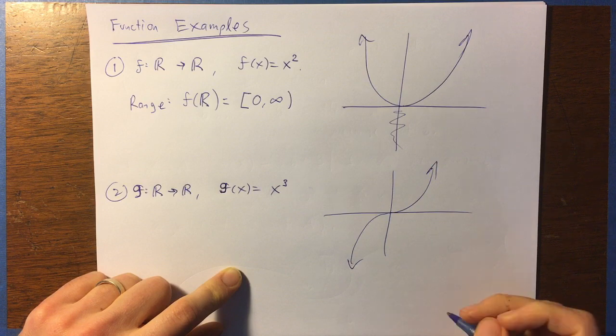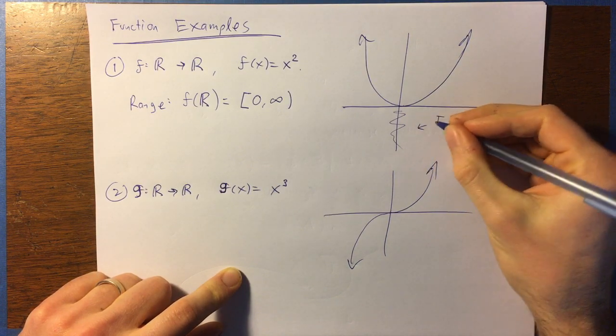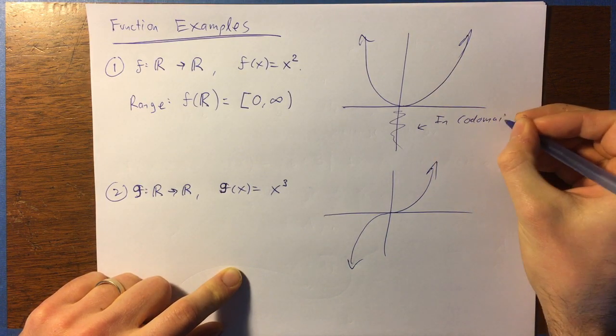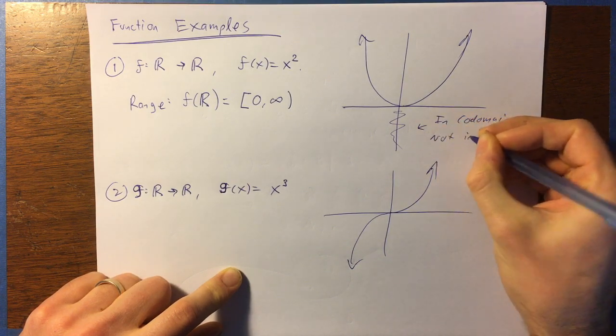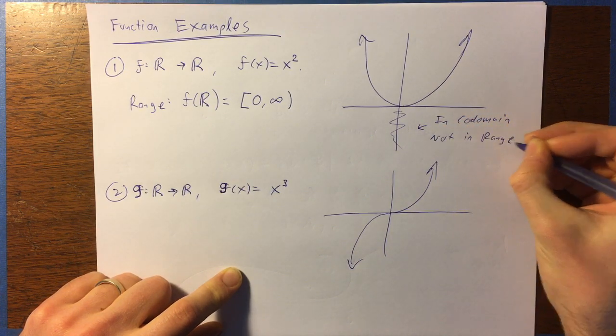So there's these numbers down here, right, that are, you know, in the codomain, but they're not in the range. Okay, and you might ask, well, like, why did you say that the real numbers was going to be the codomain?